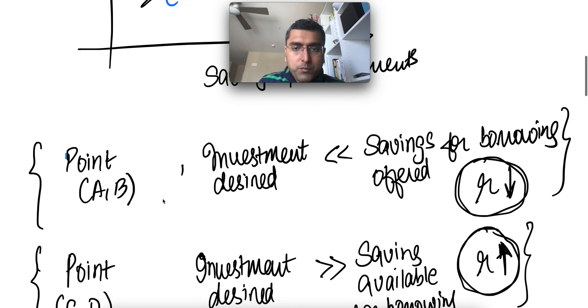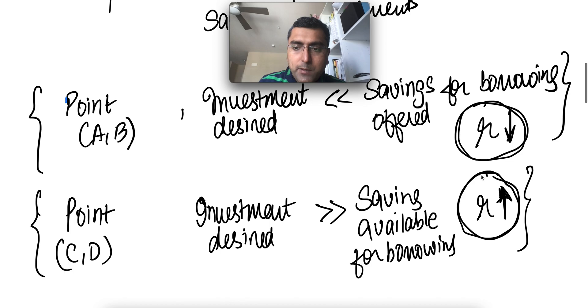So that's what I've written here, at point A and B, how interest rate falls, and point C and D, how interest rate has pressure to go up.